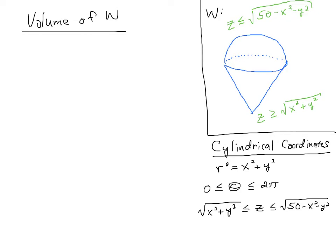So we have z is greater than x squared plus y squared. I'm going to take a square root of that, so that's the cone here on the bottom.